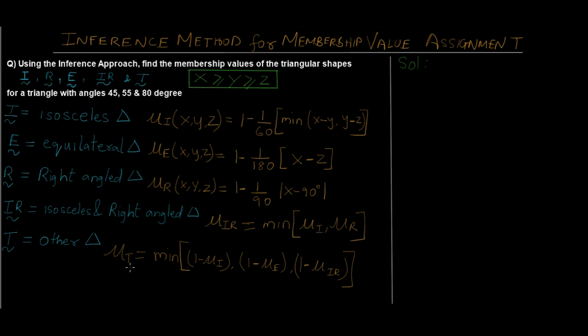As you can see on the screen, I've written the question in white. So using the inference approach, find the membership values of the triangle shapes I, R, E, IR, and T. I stands for isosceles triangle, E stands for equilateral triangle, R stands for right angle triangle, IR stands for isosceles right angle triangle, and T stands for other triangles. We have to find out the membership values for each of these triangles, and the formula to find out the membership value is given as follows.